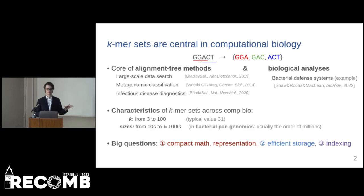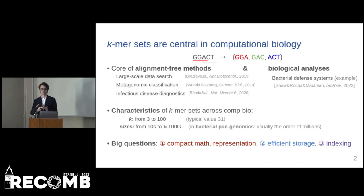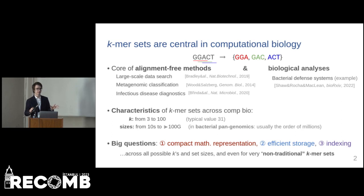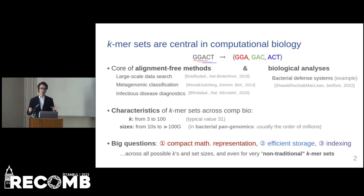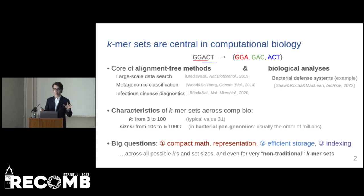There are several big questions regarding the representation of the k-mer set: do we have a representation that is mathematically tractable, that enables us to efficiently store the k-mer set and efficiently index it? And if we want to use this as a building block for data structures and applications, it should work not only for some particular values of k and particular set sizes, but in general, even for very non-traditional k-mer sets.